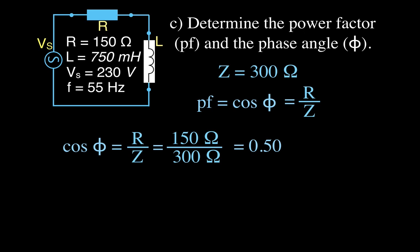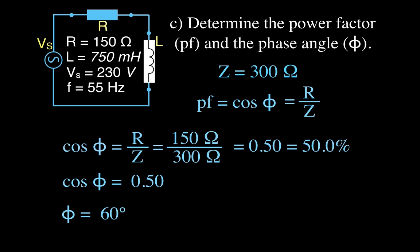We can say the power factor is 50%. To find the phase angle, we take the angle whose cosine is 0.5, and that angle is 60 degrees. So the phase angle for that circuit is 60 degrees.